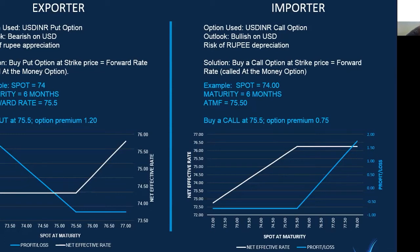If on the maturity day the currency appreciates and the USD/INR rate falls below 74, then the exporter exercises the option and receives the rate of 75.5. If on the maturity day the rupee depreciates and the USD/INR rate is above 75.5, then the exporter chooses not to exercise the option and receives the current market rate.